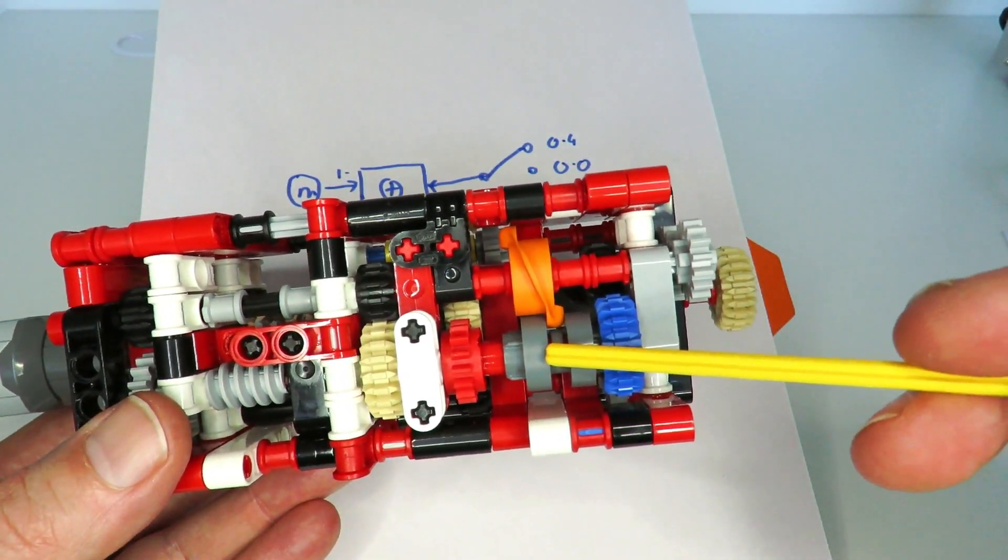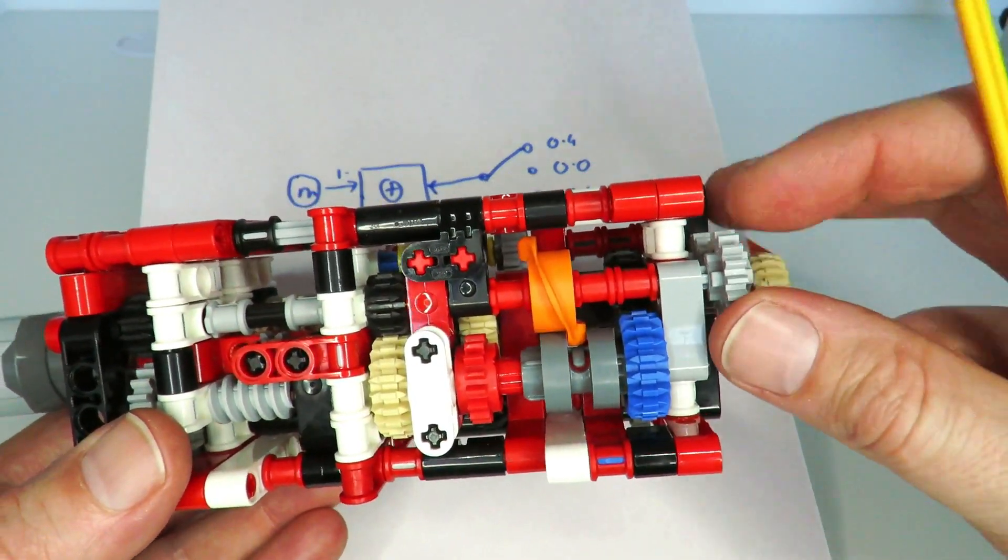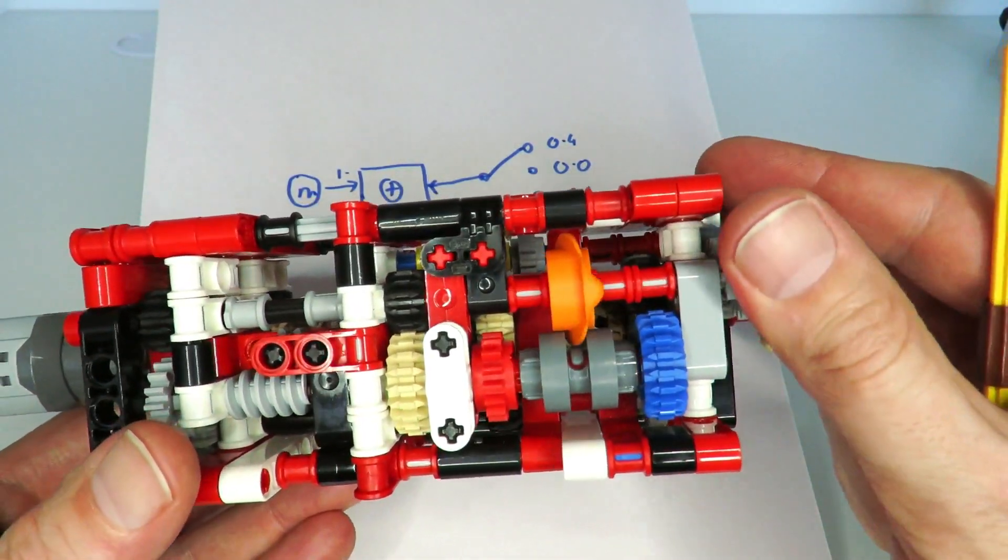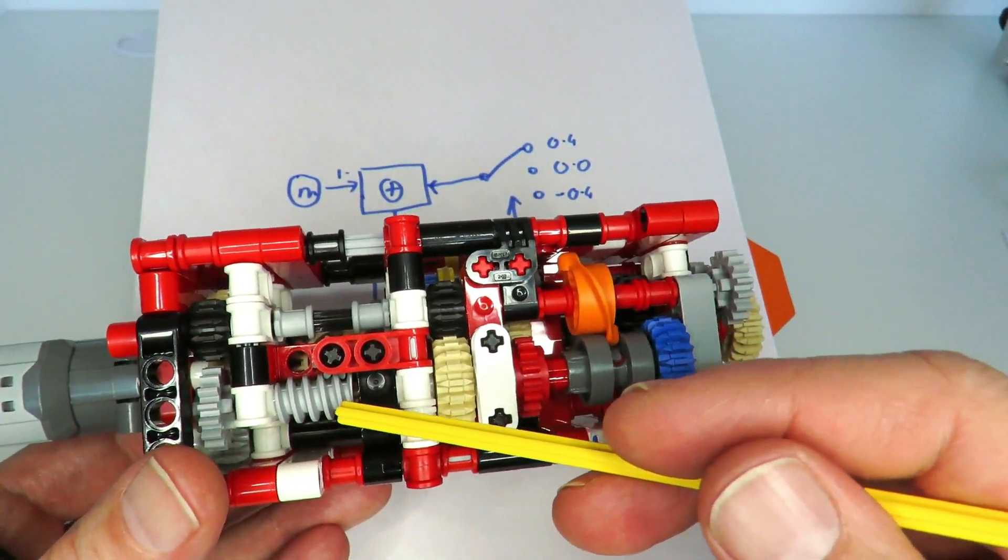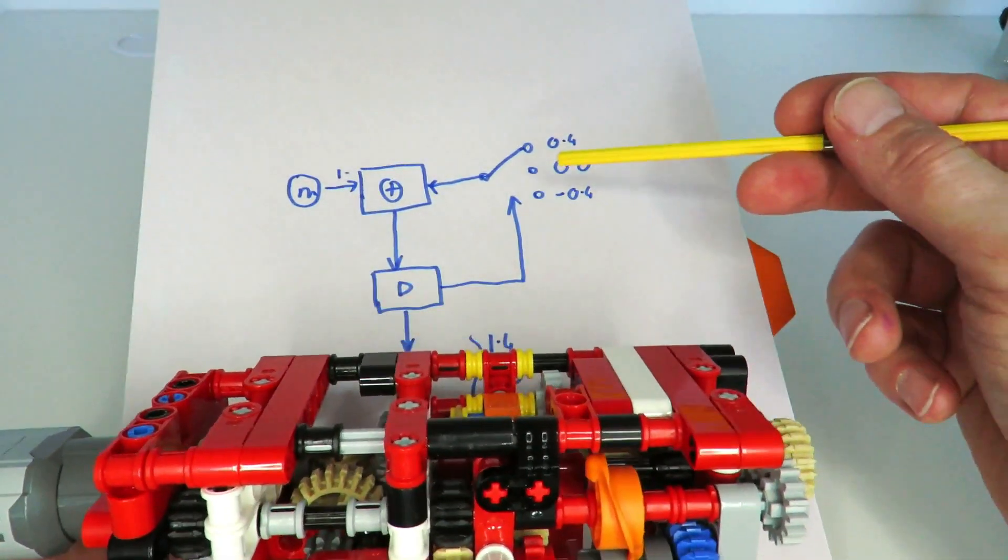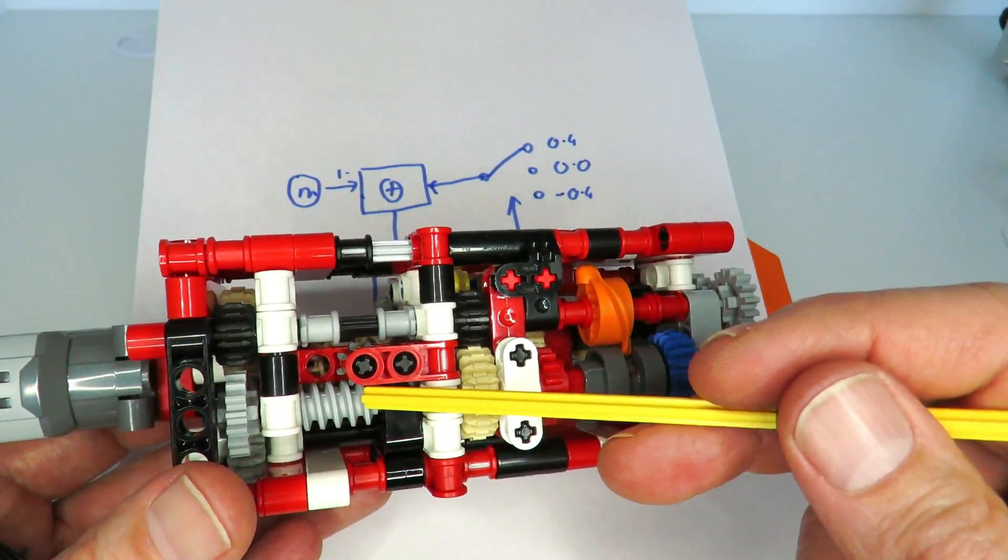And then once that torque detection detects some torque, it'll rotate the rotary catch, and that rotary catch will switch between the three different speeds. So here we've got that speed one, then we've got neutral which is speed two, and over here we've got speed three. You can see that kind of works like this.